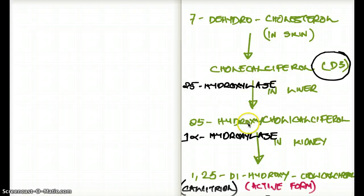Cholecalciferol then goes to the liver. In the liver, with the help of the enzyme 25-hydroxylase, cholecalciferol is converted to 25-hydroxycholecalciferol.